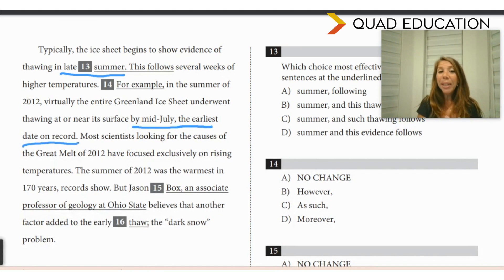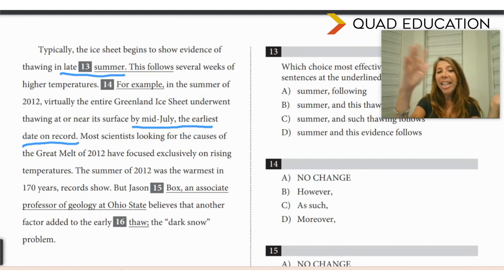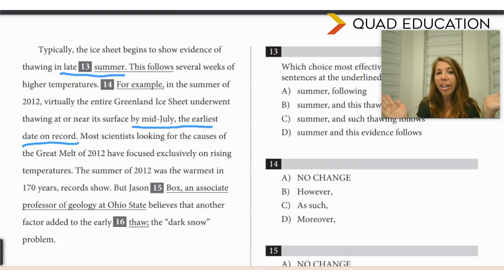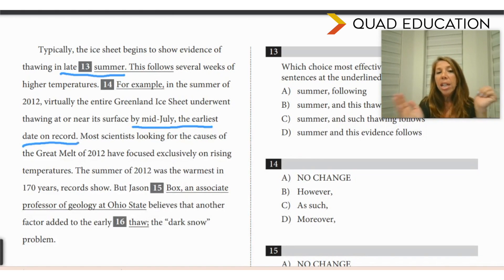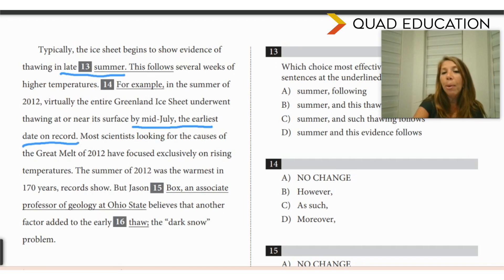So here, we have typically late summer. In the next sentence, we find out it's the earliest date on record. Those two sentences contradict each other, so we would choose the word however.